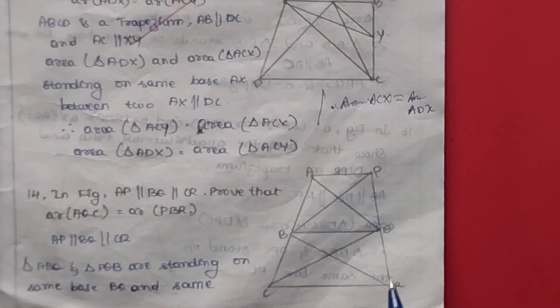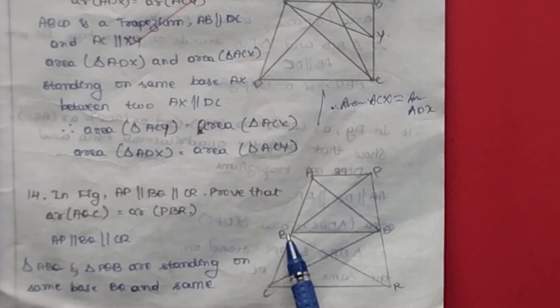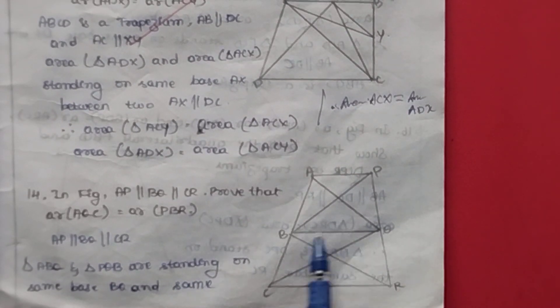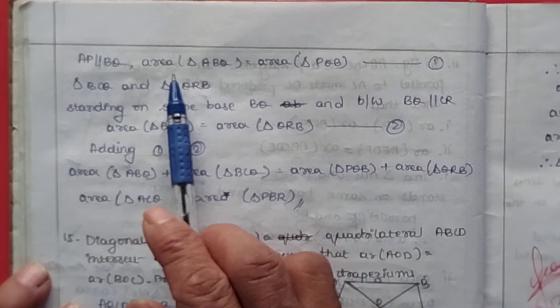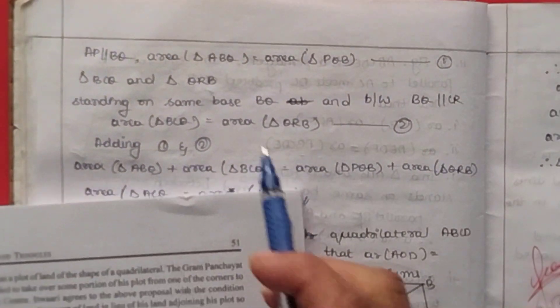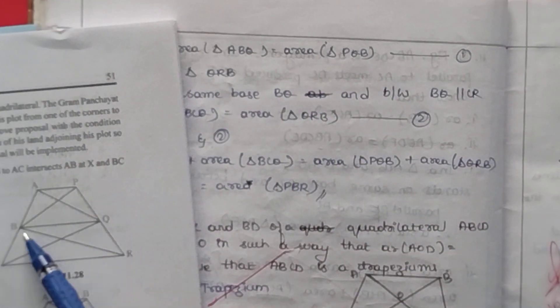In the solution: AP is parallel to BQ, and CR is parallel to BQ. Triangles ABQ and PQB stand on the same base BQ and lie between the same parallels, so area of triangle ABQ is equal to area of triangle PQB. This is equation 1.